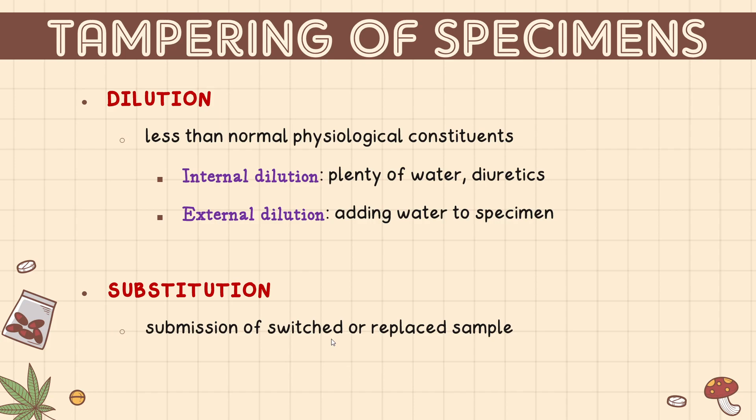Substitution involves submission of a switched or replaced sample. Prior to collection, the individual's body is searched and bags are not allowed, because there are really cases where patients bring a pre-collected sample to submit. Remember, we are trying to measure the use of illegal substances, so there are really individuals that will try their best to get a negative result — because if positive, it increases their chances of being incarcerated.